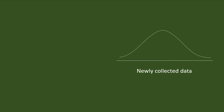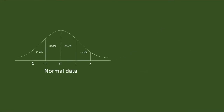Imagine that this curve represents our newly collected data and this curve represents normally distributed data. This is an ideal curve, a mathematical model structured with the assumption that scores are distributed so that the majority is concentrated towards the center of the curve, with the rest distributed towards the left or right tails.